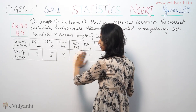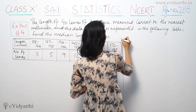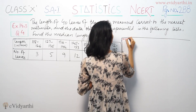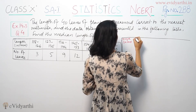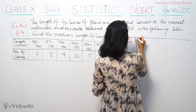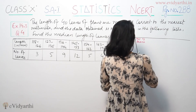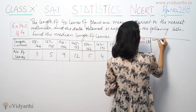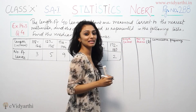This involves the length of the pieces in millimeters. First of all, we have to make the length in millimeters. Then we have the number of leaves, the frequency column, and then the cumulative frequency column.